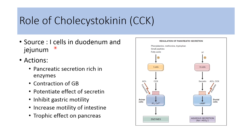Cholecystokinin is secreted by the I cells inside the duodenum and jejunum; stimulation is by products of protein digestion inside the duodenum and jejunum. Cholecystokinin increases release of pancreatic juice rich in enzymes. It produces contraction of the gallbladder and increases release of bile — this action is known as the cholagogue action of cholecystokinin. It potentiates the effect of secretin on pancreatic juice secretion, inhibits gastric motility and decreases gastric emptying, but increases motility of the intestine. Cholecystokinin also exerts a trophic effect on the pancreas.